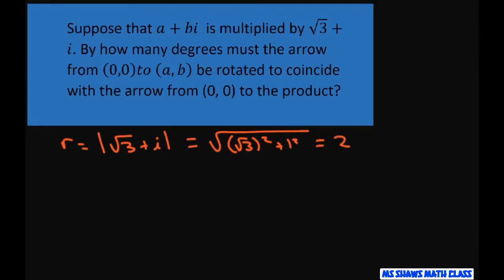So that's 2. And then your angle is, we're still in quadrant 1 here, tan inverse of 1 divided by square root of 3, and that equals 30 degrees.